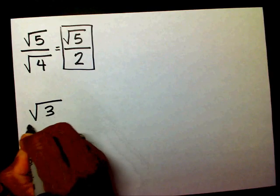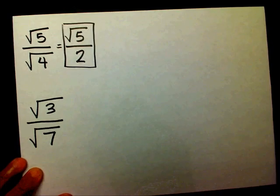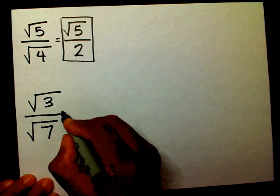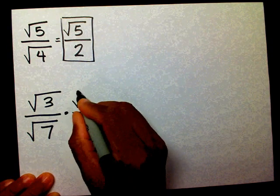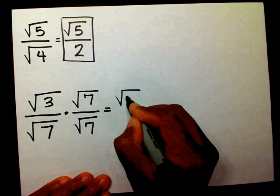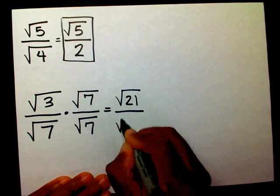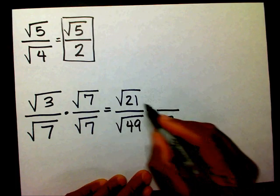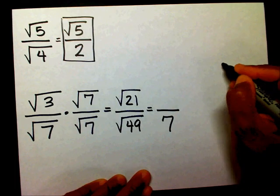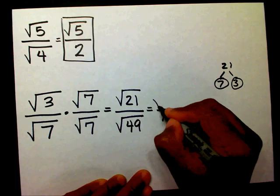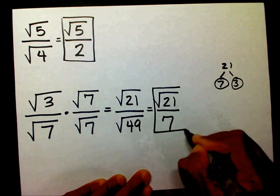Here's another one — radical 3 over radical 7. Please solve that one. This time I'm going to have to rationalize my denominator by multiplying the numerator and the denominator by radical 7. So radical 3 times radical 7 is radical 21, and radical 7 times radical 7 is radical 49 — I've created that perfect square again. Radical 49 is 7. Radical 21 only breaks down to 7 and 3, both of which are prime numbers, so I can't break this down anymore. Final answer: radical 21 over 7.